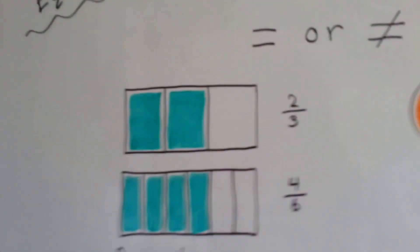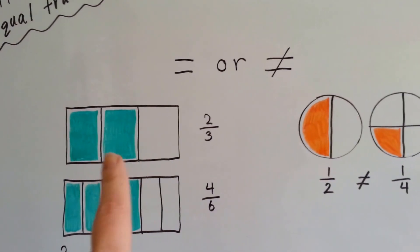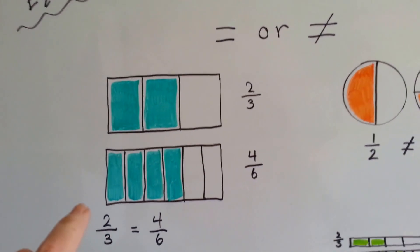You'd have to have two fourths to be equal to this half. So one fourth just doesn't cut it. So let's take a look at some more fractions. Are these equal or not equal? Let's look at these. Let's look at this one, and we'll look at that one later.